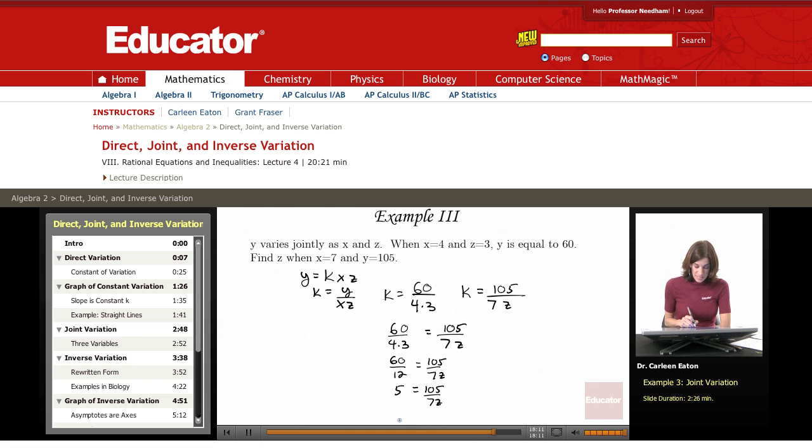I'm going to multiply both sides by 7z to get 7z times 5 equals 105. 7 times 5 is 35 times z equals 105. Dividing both sides by 35, you'll find that z equals 3.